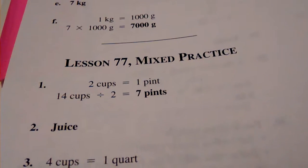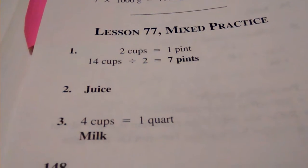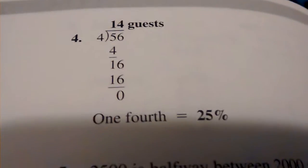77, number 1, 7 pints. Number 2, juice. Number 3, milk. Number 4, 14 guests.